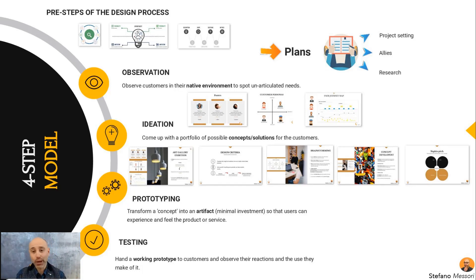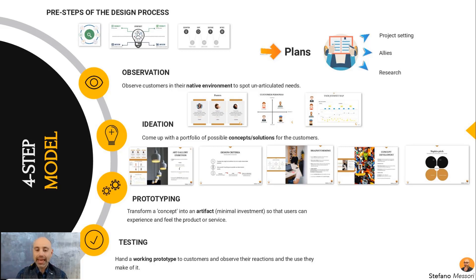Brainstorming sessions within the design thinking process work because people start to have what we call design criteria — a common mind. We agree where we stand. We take the outcome of our brainstorming session and bring it into a phase called concept development.